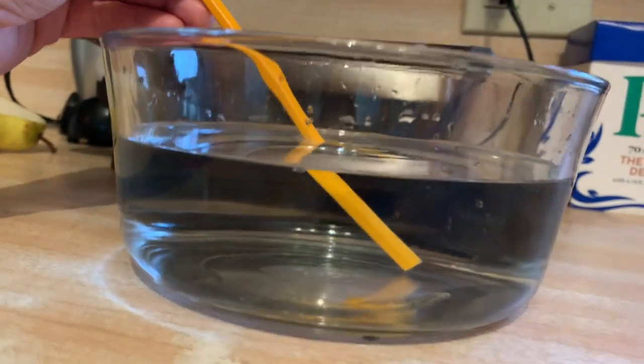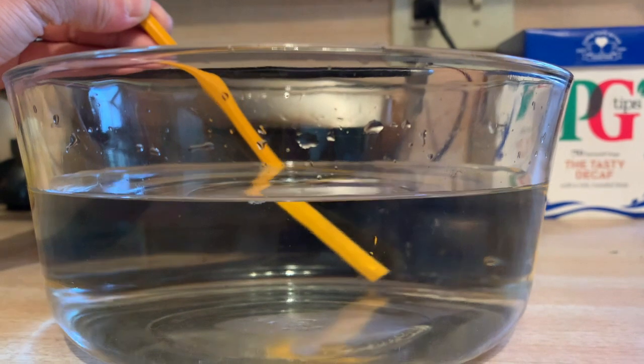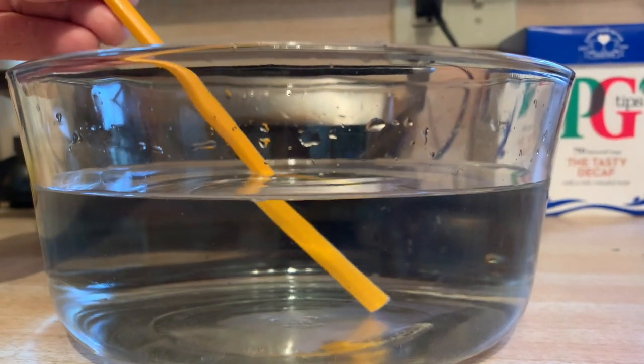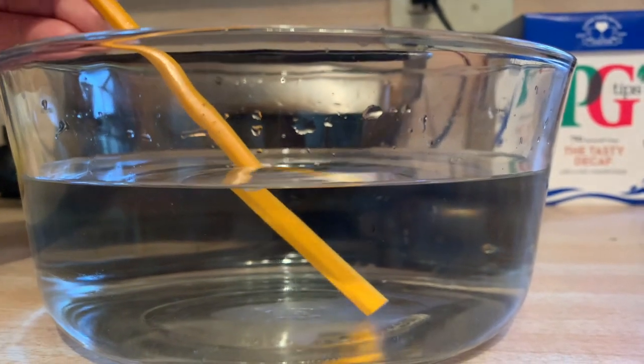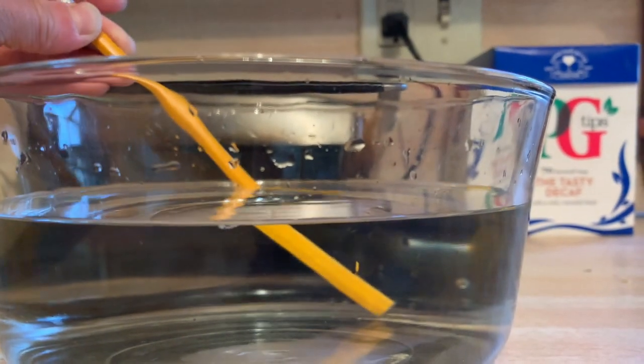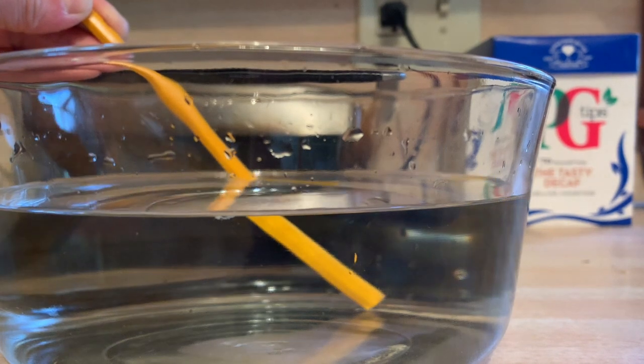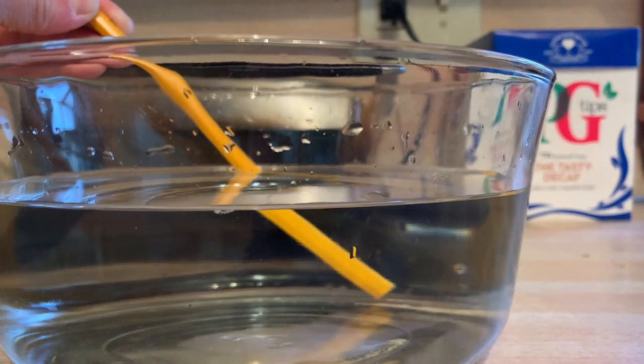Here, at the rim of the bowl, you can see the refraction almost makes it appear that the pencil is broken at the top. Then, as it enters the water, you can see another point at which it appears to break and bend back on itself.